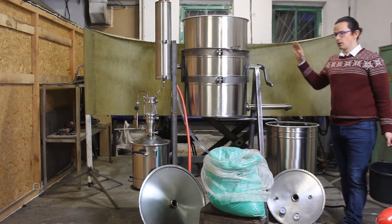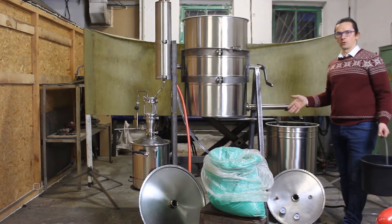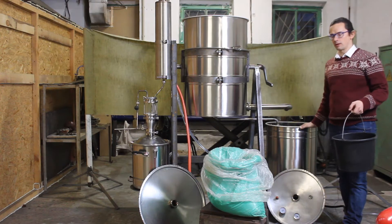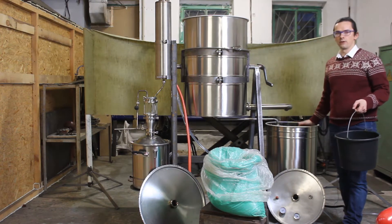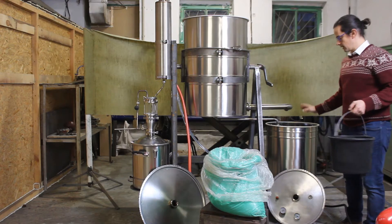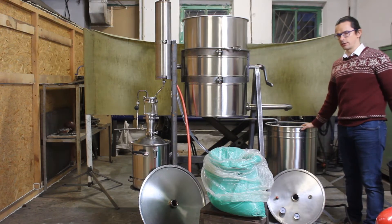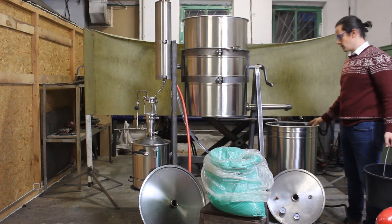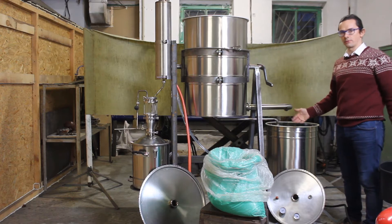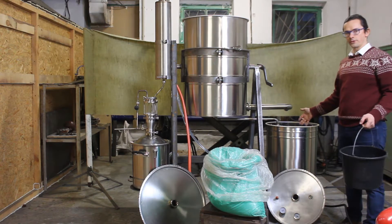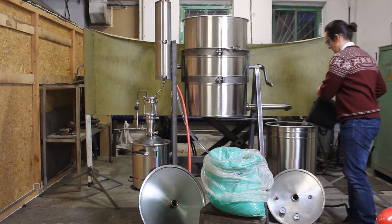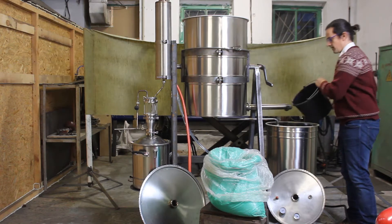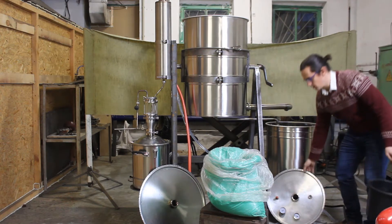After we installed all the equipment, we of course have to fill up the vapor generator for this equipment. Here we have 100 liter volume capacity which functions as a vapor generator, so we pour water here and then we close it with a cover.